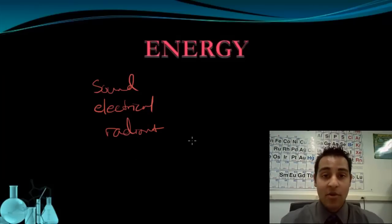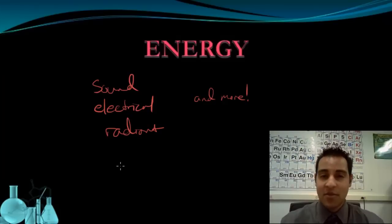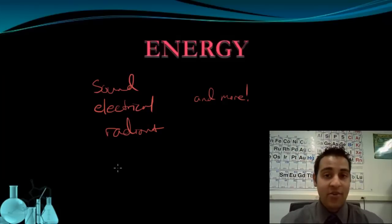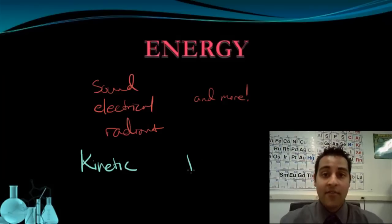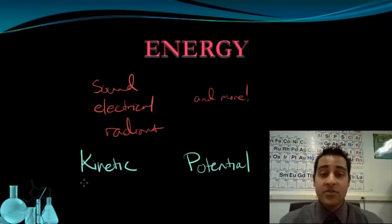And there are many more. However, all these types of energy can be classified into two categories — and some are in both categories at the same time. But in general we have two large categories of types of energy: we have kinetic energy and we have potential energy. These are our two main types of energy.